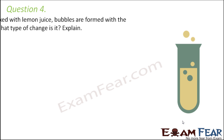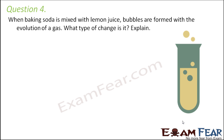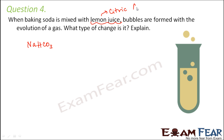Question number 4: when baking soda is mixed with lemon juice, bubbles are formed with the evolution of a gas — what type of change is it? Baking soda is sodium bicarbonate (NaHCO3), and lemon juice contains citric acid, which contains H+ ions.